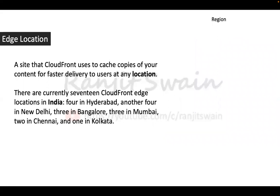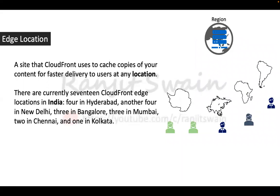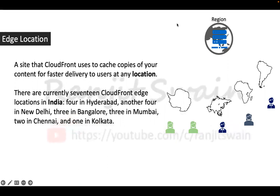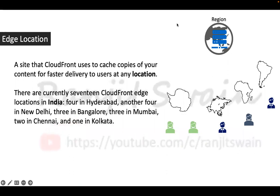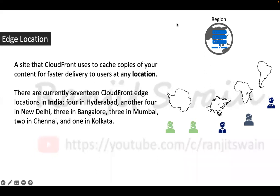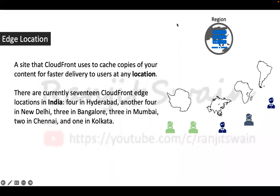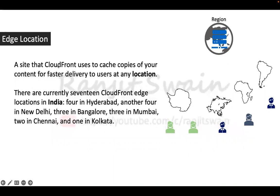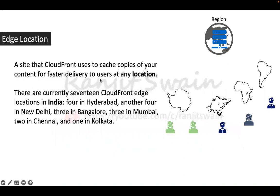The next key term is edge location. An edge location is a site that CloudFront uses to cache copies of your content for faster delivery to users at any location. There are currently 17 CloudFront edge locations in India: four in Hyderabad, four in New Delhi, three in Bangalore, three in Mumbai, two in Chennai, and one in Kolkata. Worldwide there are many more.